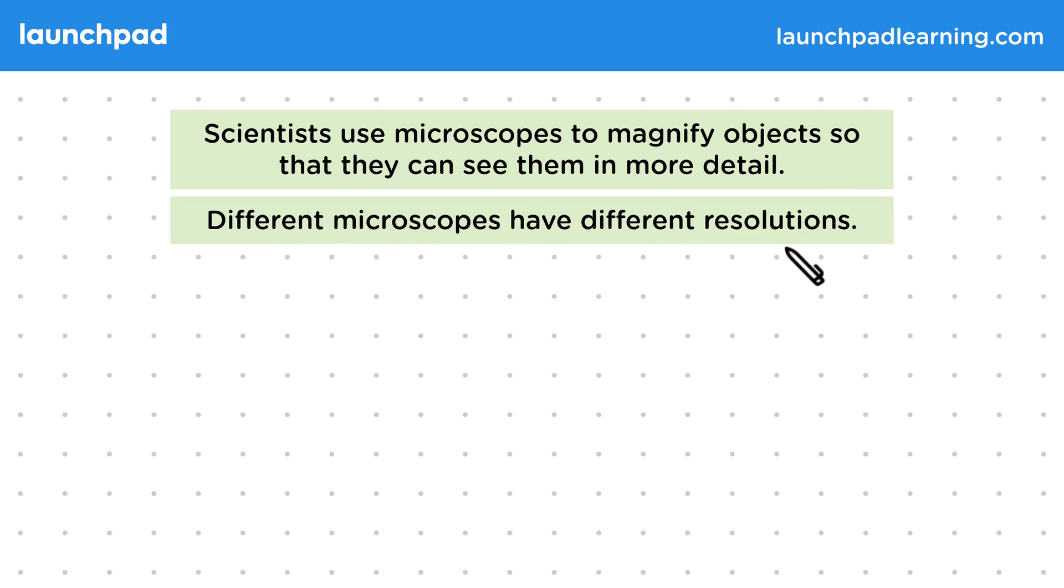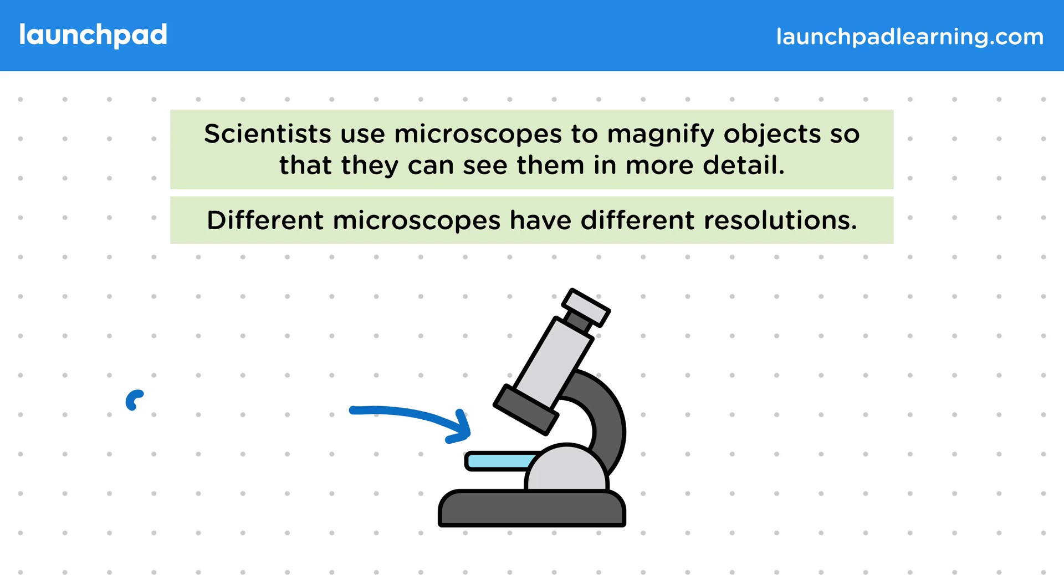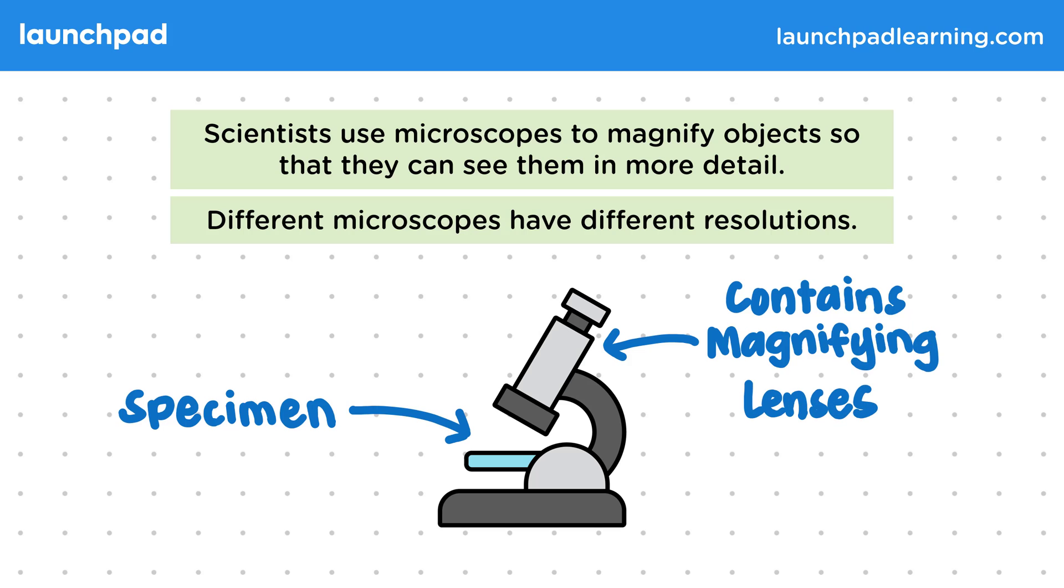Different microscopes have different resolutions. Here's a simple diagram of a microscope. Our specimen will sit here and we can look at it through the eyepiece. This part of the microscope contains magnifying lenses, which produce a larger image, allowing us to look at small objects in detail.